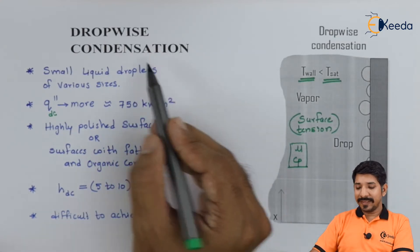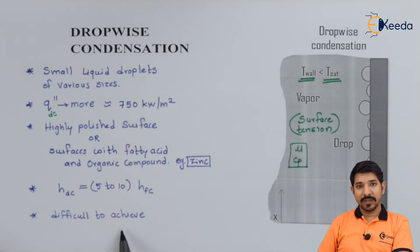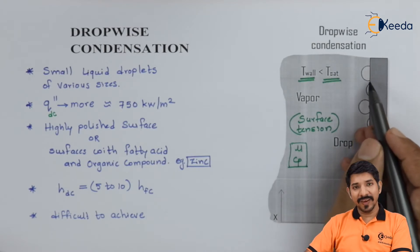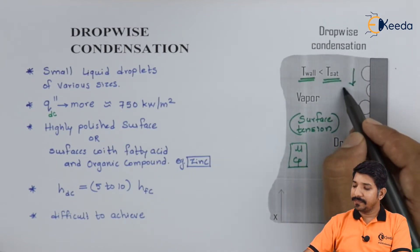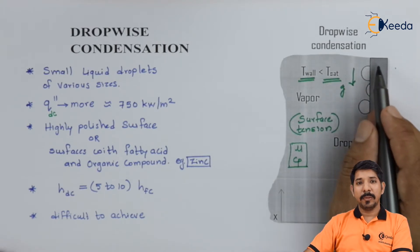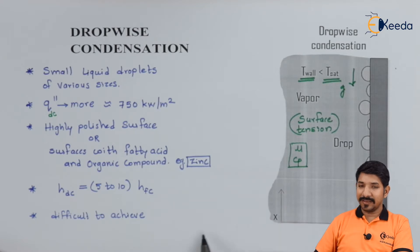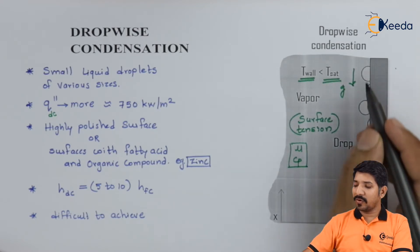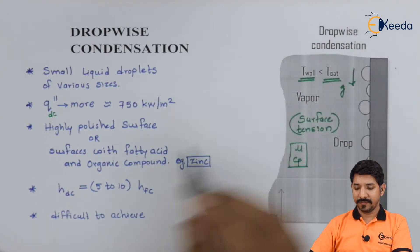The only challenge with drop-wise condensation is that it is quite tough to achieve. In most scenarios, due to gravity, the drops will start falling and then a small film will be formed over the surface. This is a gradual process — initially, when the time is less and small droplets form on the surface, that kind of condensation is drop-wise condensation.